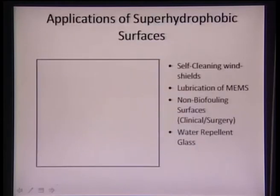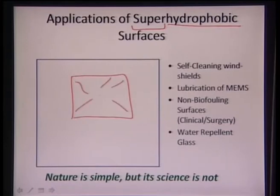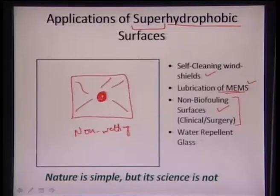So we want to engineer what is called non-wetting. Coming to something called hydrophobic surfaces — specifically super hydrophobic surfaces — we see that in a lotus leaf, water trickles to every location, forms a totally spherical droplet, and does not wet the surface at all. This non-wetting surface can be utilized for self-cleaning windshields, lubrication of micro-electromechanical systems, non-bio-fouling surfaces, and water-repellent glass.